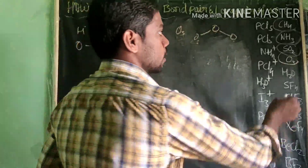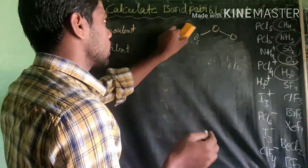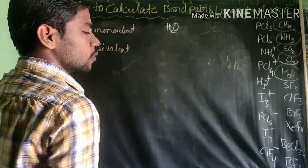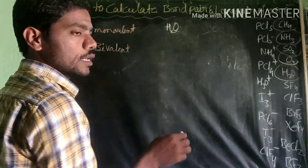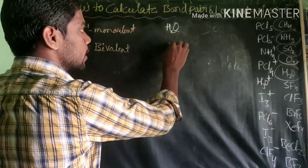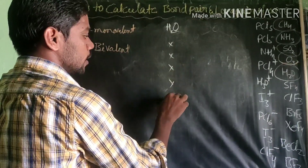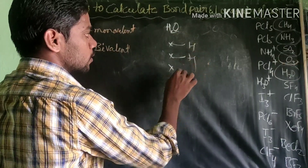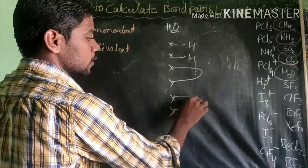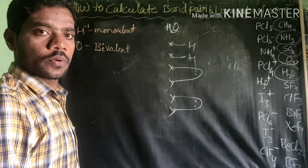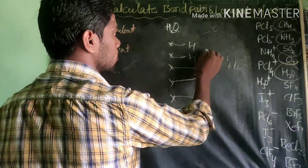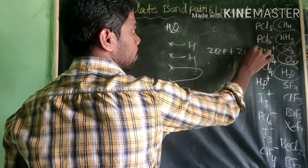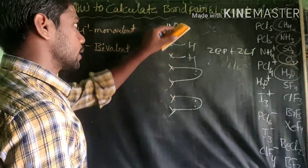Next we go through water, H2O. Oxygen is the central atom with 6 valence electrons. There are 2 hydrogens making 2 bonds, leaving 4 electrons — that gives 2 lone pairs. Therefore, water has 2 bond pairs plus 2 lone pairs of electrons.